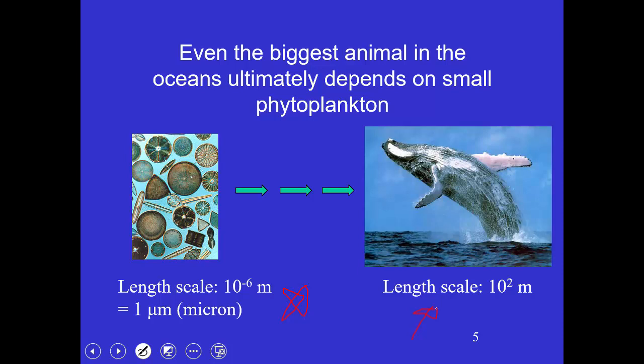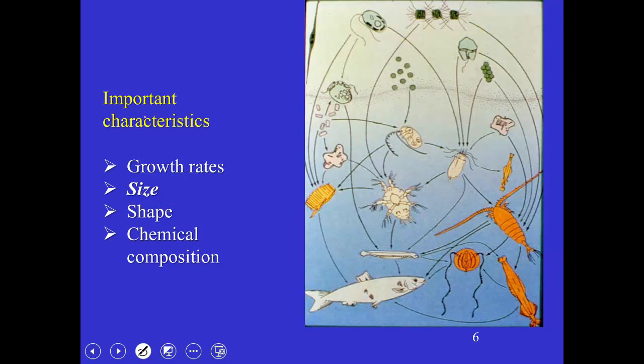We see a huge range of size in the oceans, from organisms down to a micron (10⁻⁶ meters) all the way up to 10² meters—eight orders of magnitude. Even the biggest organisms, the charismatic megafauna, are based on these really small organisms about a micron in size. That has really important implications for how things are structured in the oceans. On land the primary producers are very big and have cellulose, versus the small phytoplankton in the ocean which are basically very protein rich.